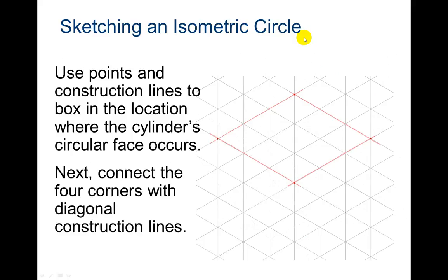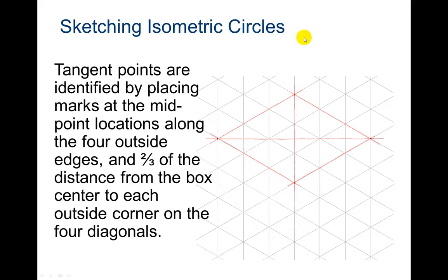We're first going to draw that imaginary box. Next, connect the four corners with diagonal construction lines. So now you know where the center point's going to be, because you've drawn those construction lines to find it.